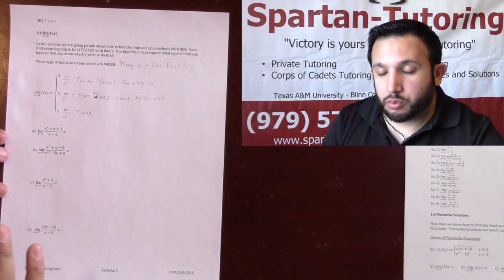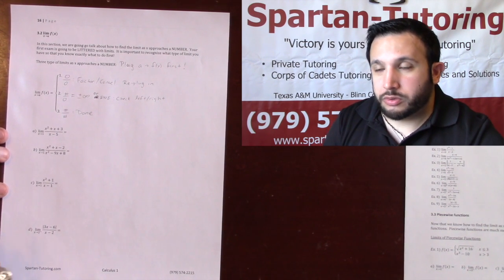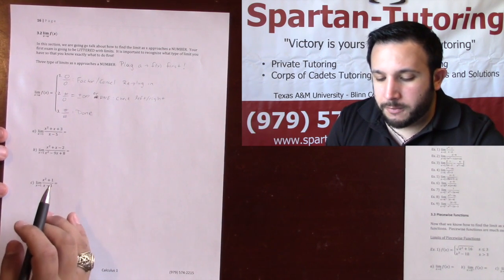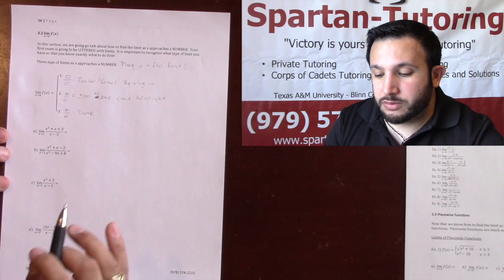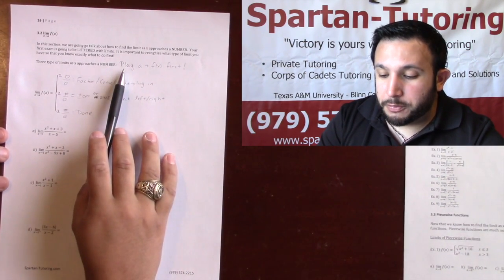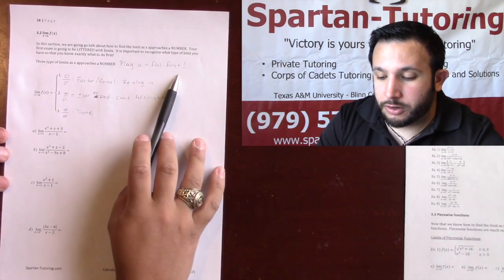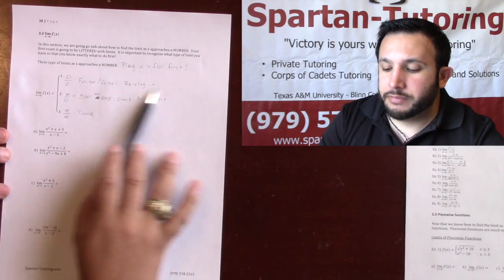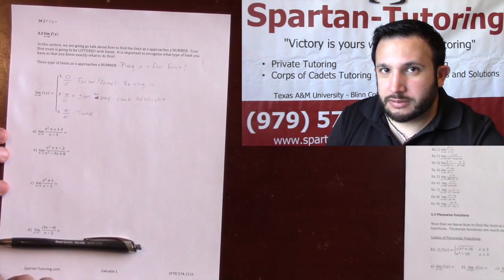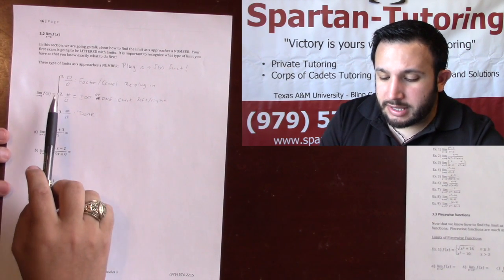The rules as x approaches a number will be different than the rules as the limit as x approaches infinity — we'll talk about that in another video. In this one we're going to talk about the limit as x approaches a number, and the strategy is: you need to plug that number x equals a into your function first. Go ahead and jot this down, we'll talk about it and do a couple examples.